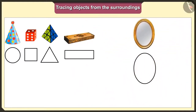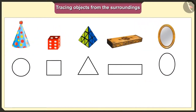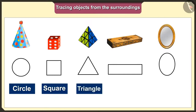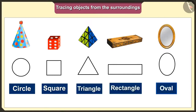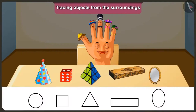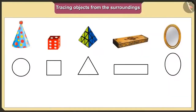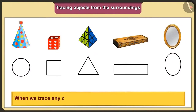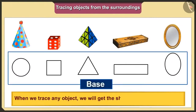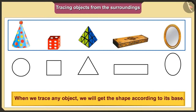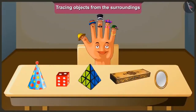Now tell me which shape we would get when we trace this mirror. The base of this mirror is oval, so we will get an oval shape when we put it on paper and trace it. Today we traced the objects in our surroundings and got the shapes: circle, square, triangle, rectangle and oval. Remember that when we trace any object, we will get the shape according to its base.